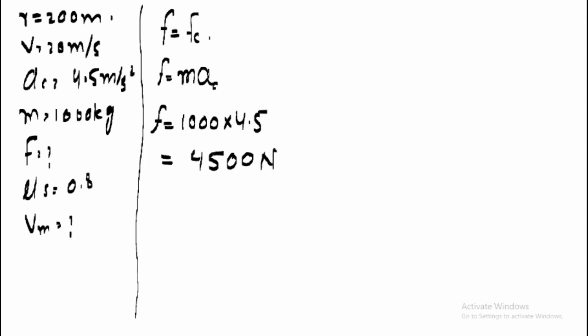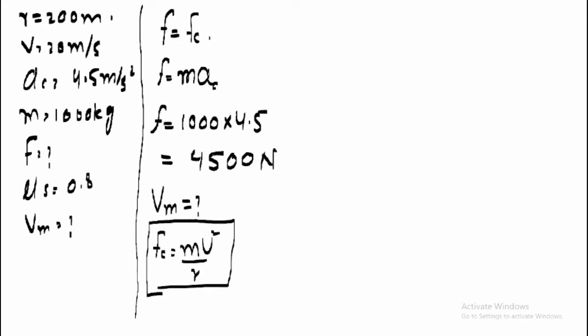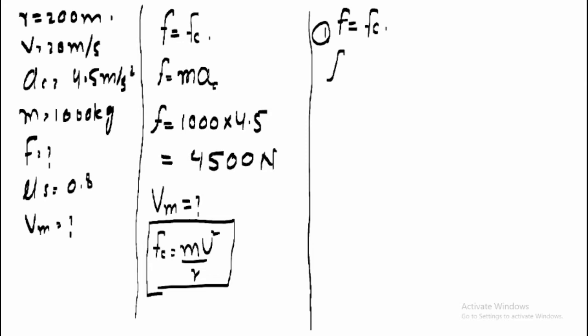The other thing we have to calculate is maximum velocity. We can calculate the maximum velocity using the formula: centripetal force equals mv² divided by r. In this numerical, the maximum force of friction is equal to the centripetal force.